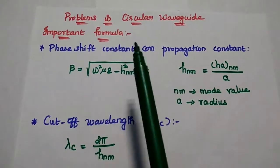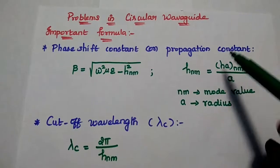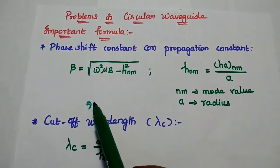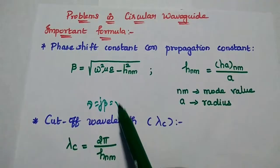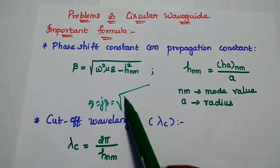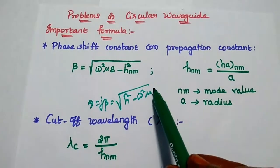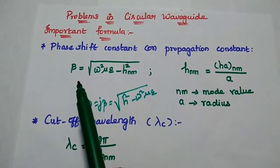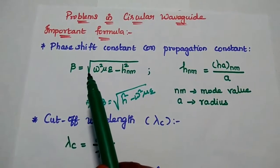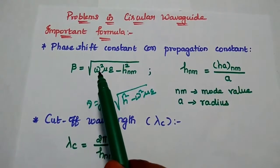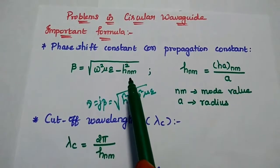The phase shift constant or propagation constant gamma is equal to j·beta, that is equal to the square root of h² minus omega² times mu·epsilon. From this, we can get the phase shift constant beta equal to the square root of omega² mu·epsilon minus h².